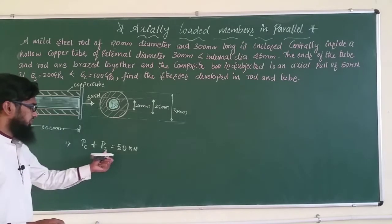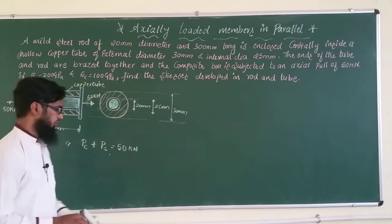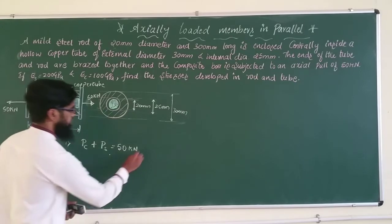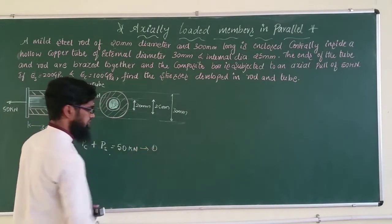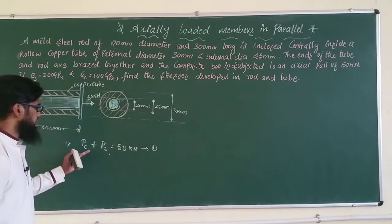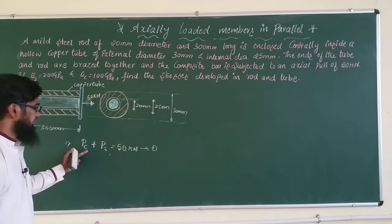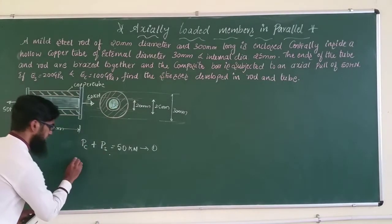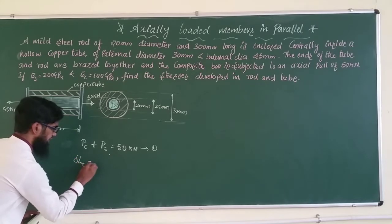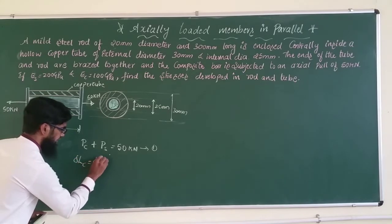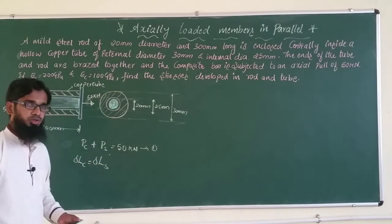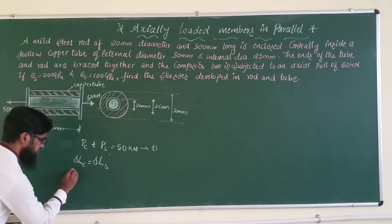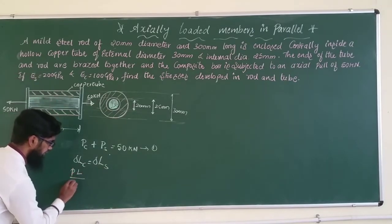From Equation 1: P_c + P_s = 50 kN — this is our first equation. For Equation 2, we use δL = PL/AE. So: P_c·L / (A_c·E_c) = P_s·L / (A_s·E_s). Since both lengths are the same, L cancels out.